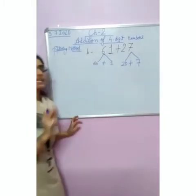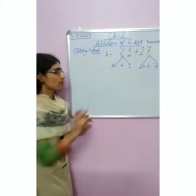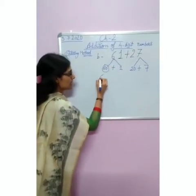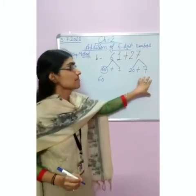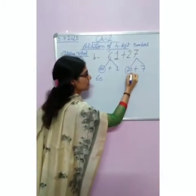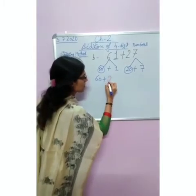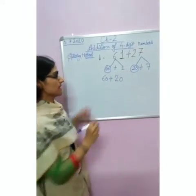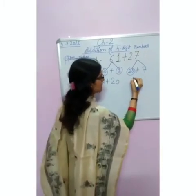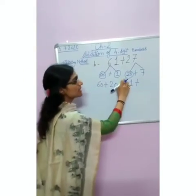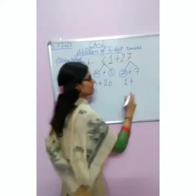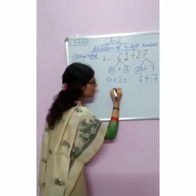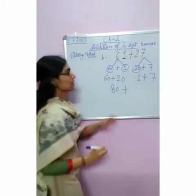After that, we will take the tens digit from both numbers. In 60 plus 1, our tens digit is 60. In 20 plus 7, our tens digit is 20. Then we will take the ones digits. In 60 plus 1, our ones digit is 1. In 20 plus 7, our ones digit is 7. Now we will add the digits together: 60 plus 20 gives 80, and 1 plus 7 gives 8.